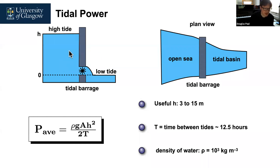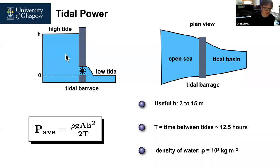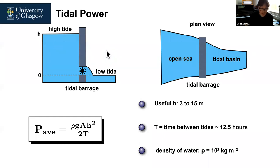You can run this in both directions. As the high tide moves to low tide, the water flows through and this side builds up. Then, as the tides change, the water flows in the opposite direction. There will be a point where no electricity can be generated when the heights are the same on both sides of the tidal barrage, but throughout the rest of the day you can generate electricity with flow in both directions.